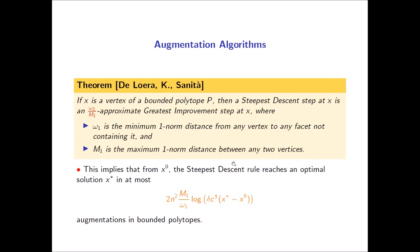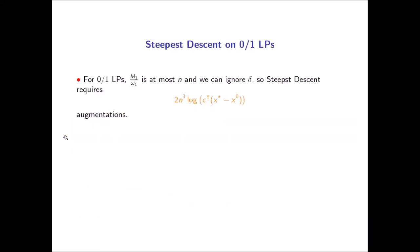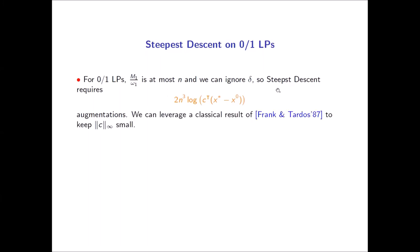In the zero-one setting, we are in a nice case where m_1 over omega_1 is at most n. Furthermore, we can ignore the delta term because the feasible region is integral — all vertices have integer coordinates, so the point in the analysis where delta appears can be skipped. We can also leverage a classical result of Frank and Tardos to keep the infinity norm of c small, which controls the size of the remaining term. Altogether, this makes the bound strongly polynomial.